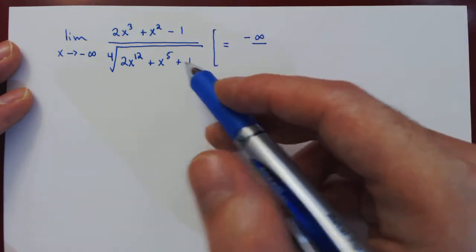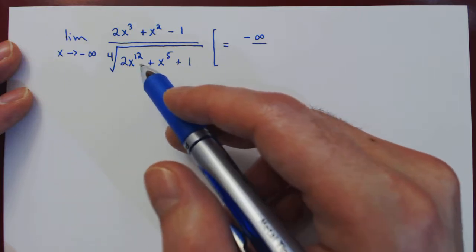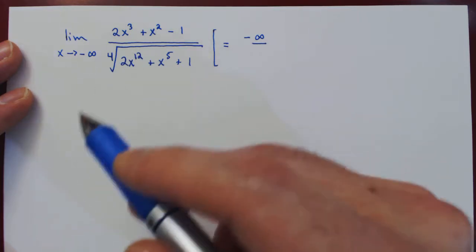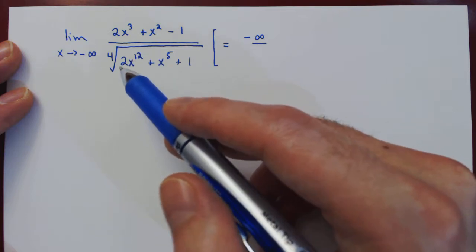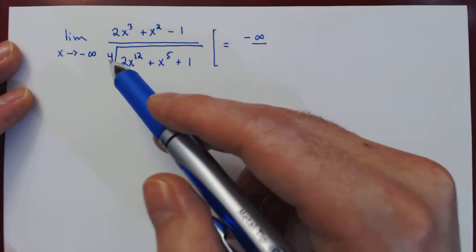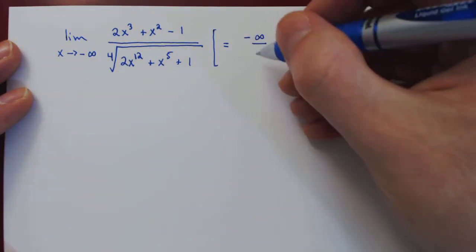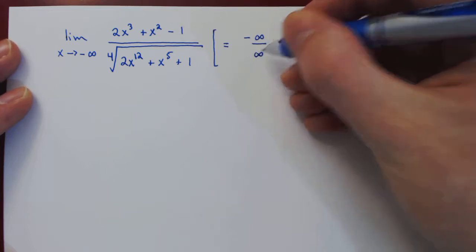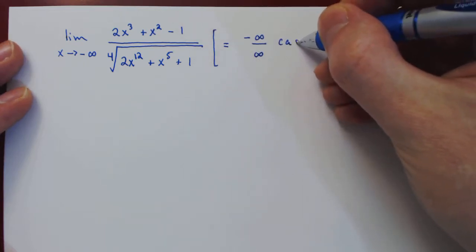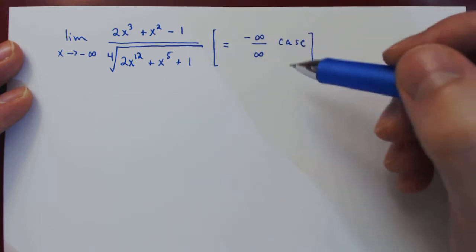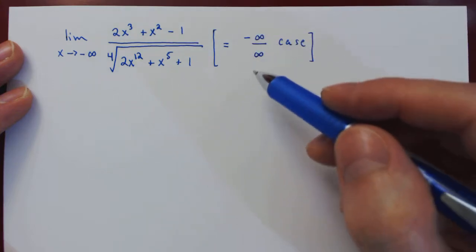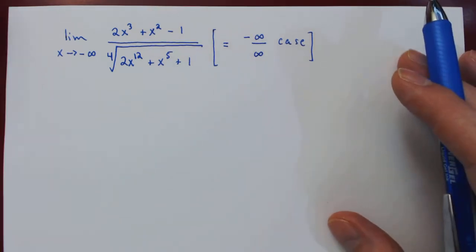And on the denominator, if we look inside the fourth root, the largest term is 2x¹², and so as x goes to negative infinity, 2x¹² goes to positive infinity, and the fourth root of infinity is also positive infinity. So we have once again an indeterminate case, the ratio of two larger and larger quantities, the top one being negative, the bottom one being positive.